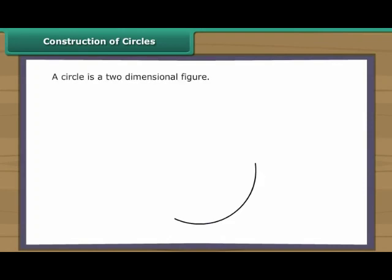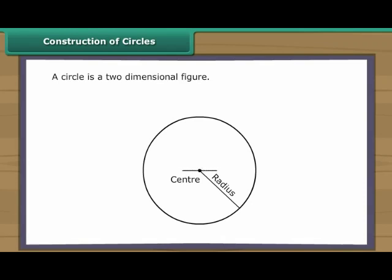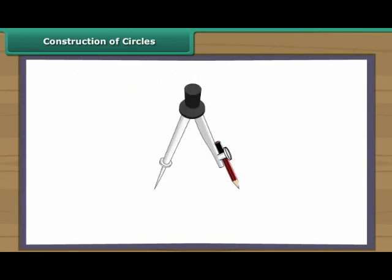Construction of Circles. A circle is a two-dimensional figure. Every circle has a centre. The distance between the centre and the boundary of a circle is known as its radius. The line segment through the centre of a circle with its end points touching the boundary of the circle is known as the diameter. The diameter of a circle is twice its radius.